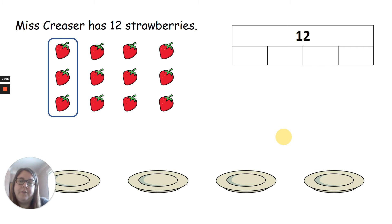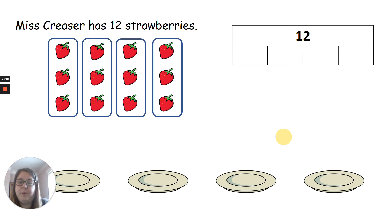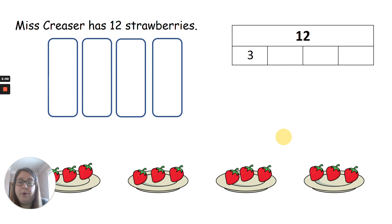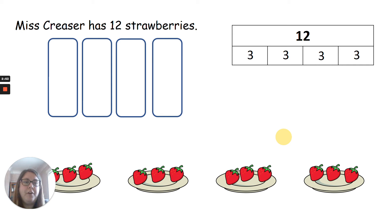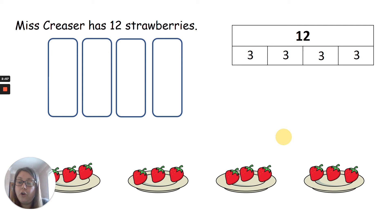Let's have a look. Let's split these strawberries between the plates. We can put three on each plate. Therefore the bar model needs three, three, three, and three. Four groups of three makes 12. Well done if you said that.